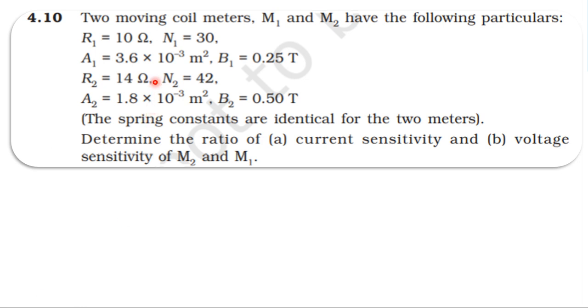From the NCERT textbook, from the topic moving charges and magnetism, problem 4.10: Two moving coil meters M1 and M2 have the following parameters.